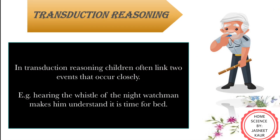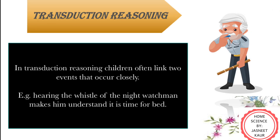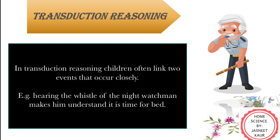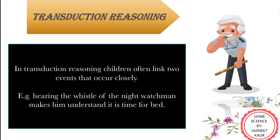Next is transductive reasoning. In this, children often link two events that occur closely together. For example, hearing the whistle of a night watchman and relating it to nighttime or sleeping time, or associating cake with birthdays, or watching parents getting ready and thinking it means going out somewhere.